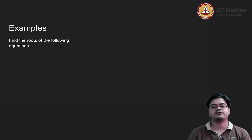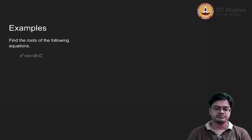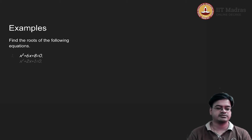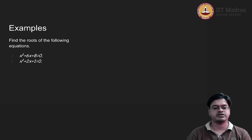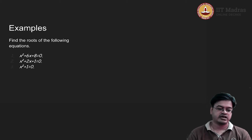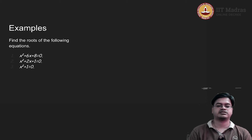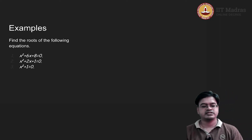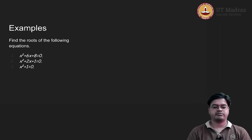The question is to find the roots of the following equations. The first equation is x² + 6x + 8 = 0. The second one is x² + 2x + 1 = 0, and the third one is x² + 1 = 0. We will take these equations one by one.